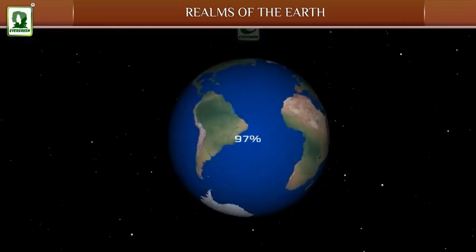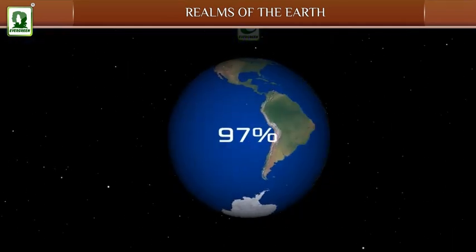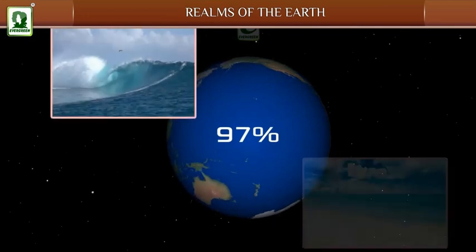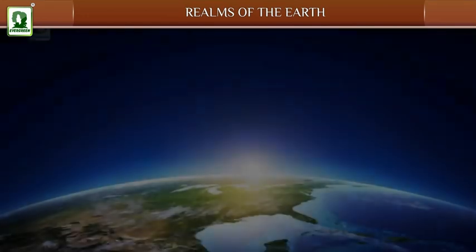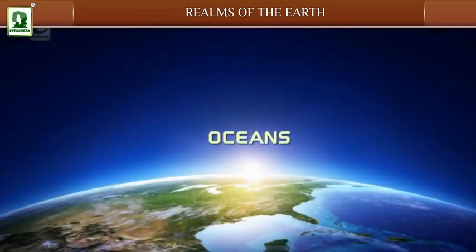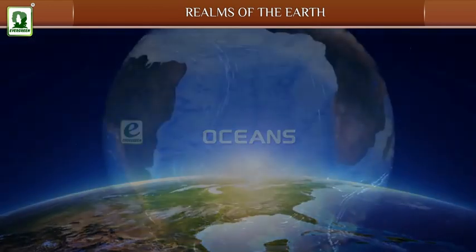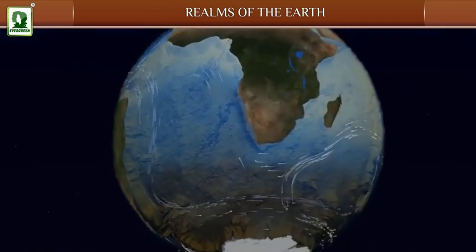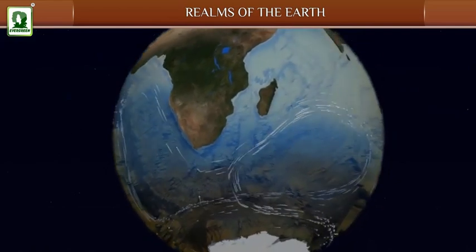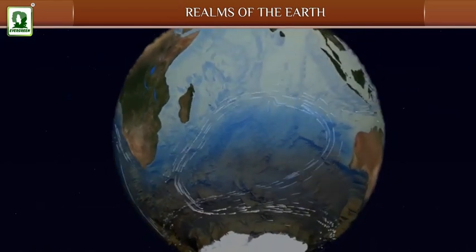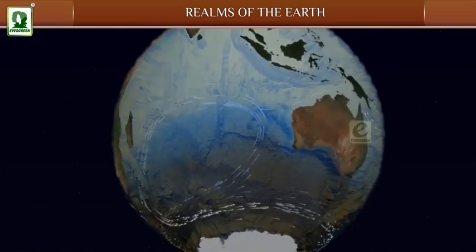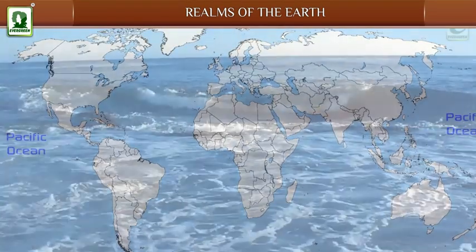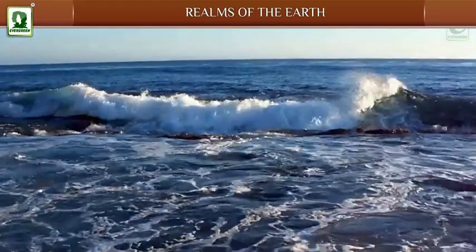97% of total water on the earth is found in oceans and seas. Oceans are very large water bodies separated by continents. There are five oceans on the earth. The Pacific Ocean is the largest ocean.